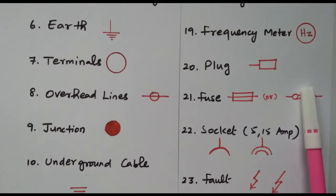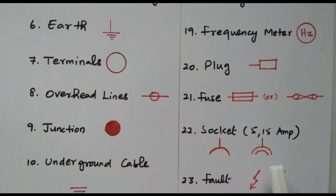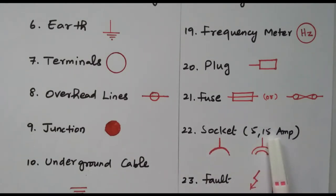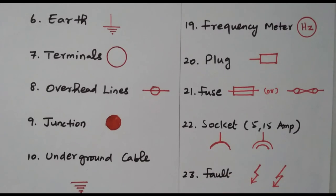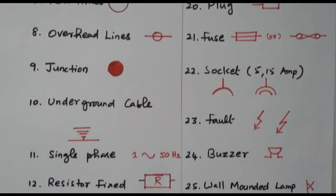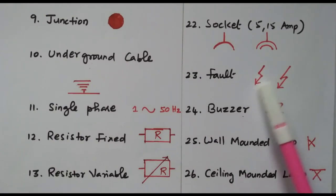If any abnormal condition occurs, the fuse will blow, so the current passes through this symbol. Then the socket, either 5 ampere or 15 ampere, is represented like this. Then fault is represented by this symbol — it looks like a thunder bolt.